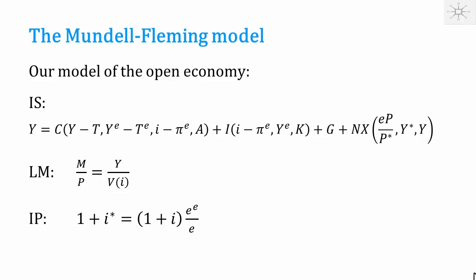To analyze the open economy in the short run, we use the same equations as before: the goods market equilibrium condition, the money market equilibrium condition, and the interest parity condition. In the short run analysis, we take the price level at home and abroad as given, so P and P-star are exogenous, contrary to the long run where those were endogenous.